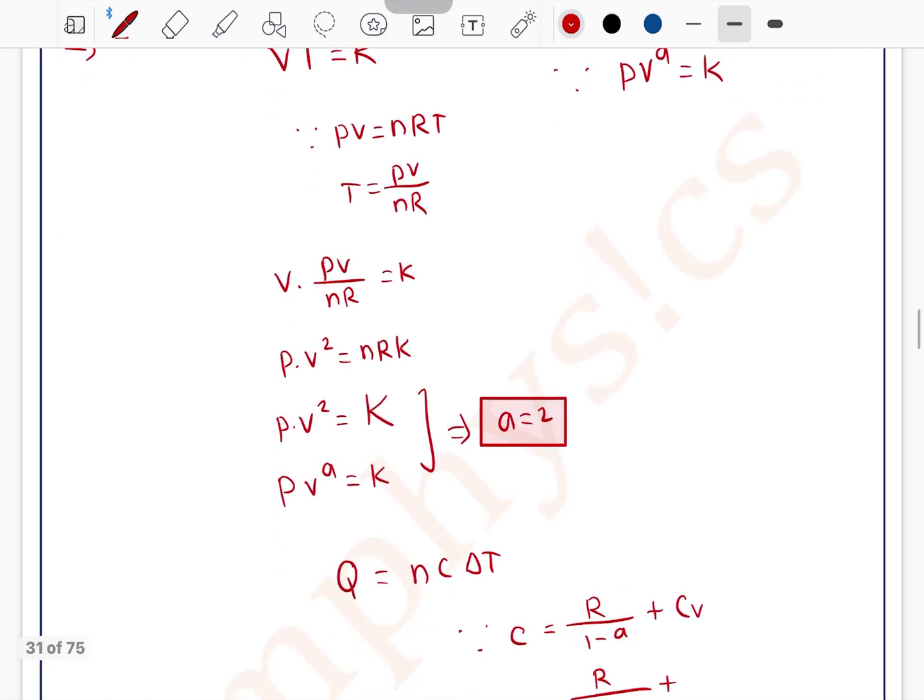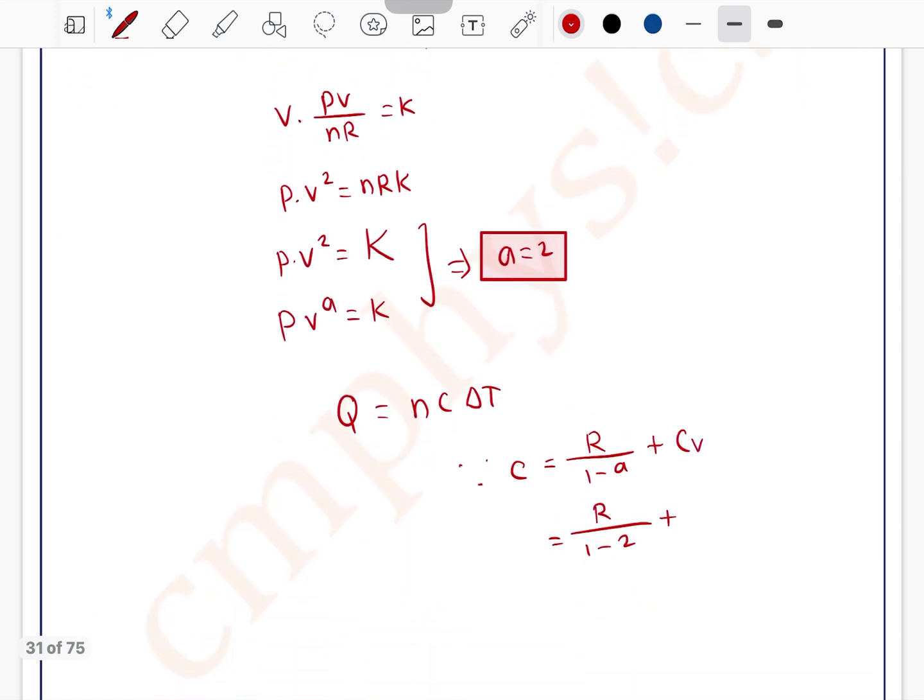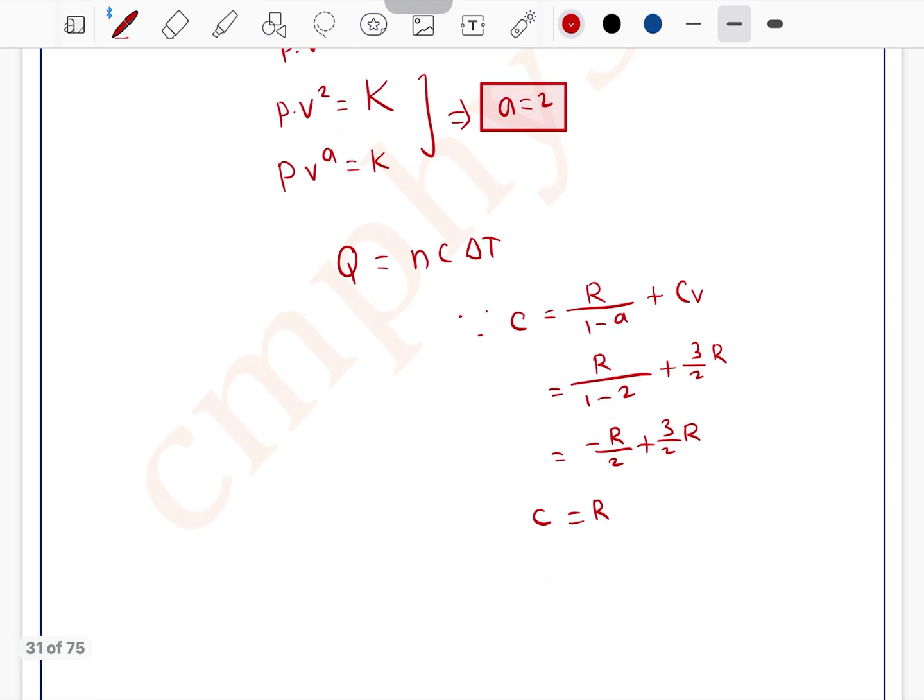CV is, which type of gas is given? Ideal monoatomic gas. So we can write f by 2R which equals 3 by 2R. So this equals minus R by 2 plus 3 by 2R. So this is 2 by 2R which equals R. C equals R.